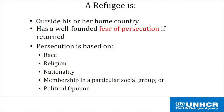Let's unpack this a bit. First, the person has to be outside the country of his or her citizenship. Second, he or she has to have a well-founded fear of persecution if returned to that country. And the persecution has to be based on one of five specific grounds: race, religion, nationality — which is usually interpreted to mean ethnicity — political opinion, or membership in a particular social group.